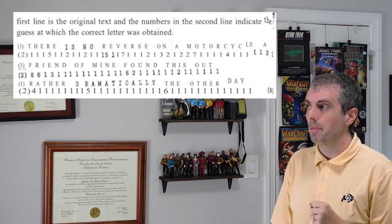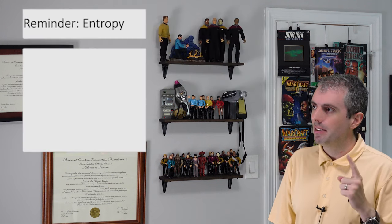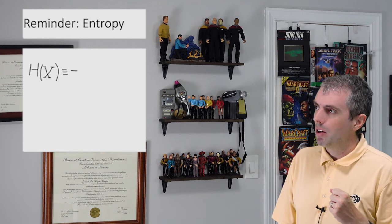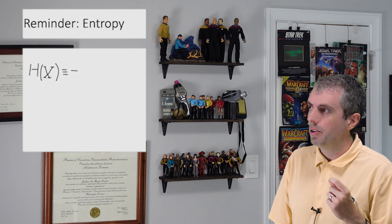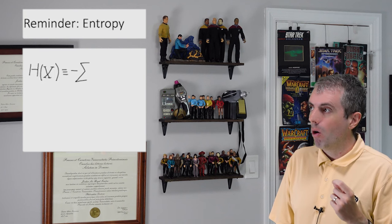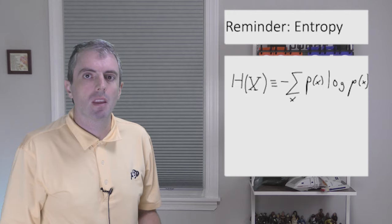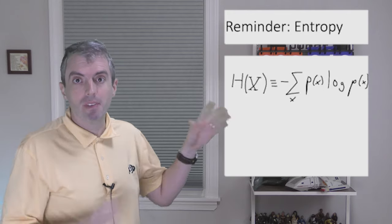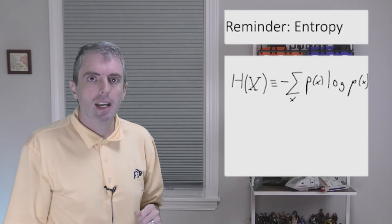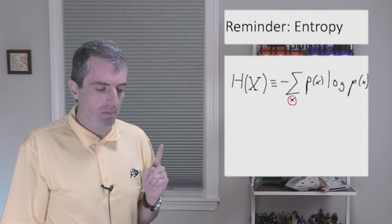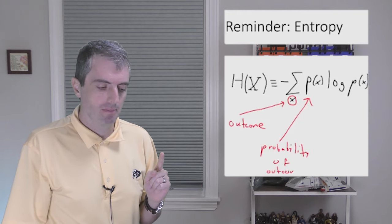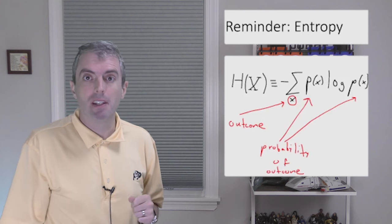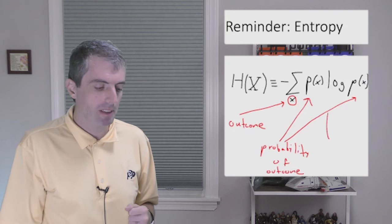To get there, let's briefly review entropy. Recall that the entropy is normally represented with the capital letter H. And we're going to take the negative sum over x, where the little x represents a single outcome. For example, p(x) is the true probability of an outcome.